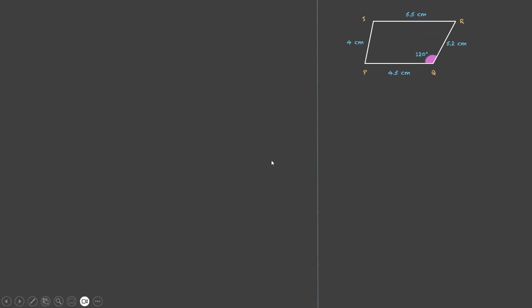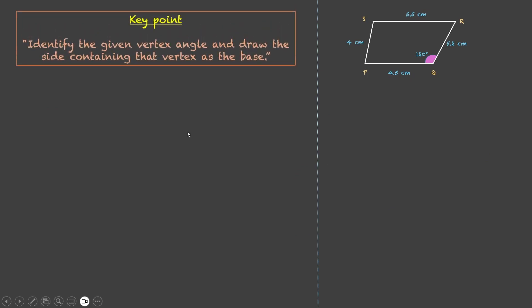A very crucial key point that will also tell us which side to pick is to identify the given vertex angle and draw the side containing that vertex as the base. So over here, we can either choose PQ or QR as our base. There's a reason behind it.